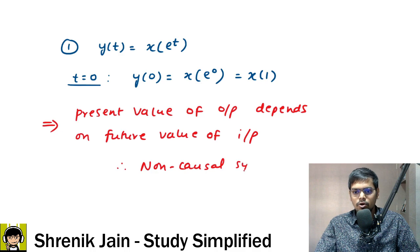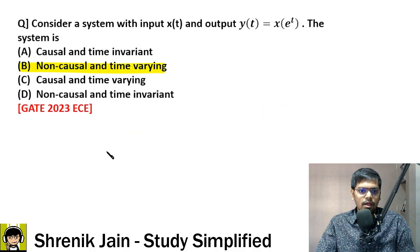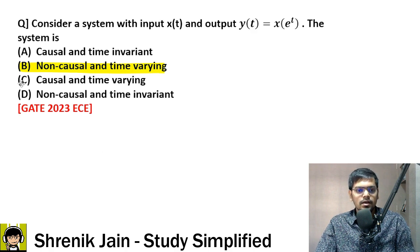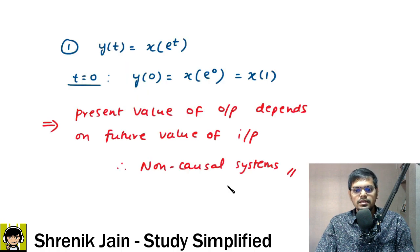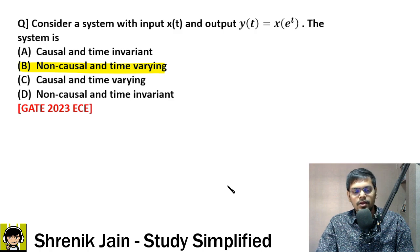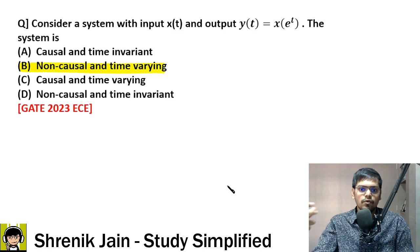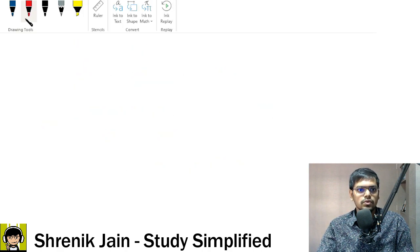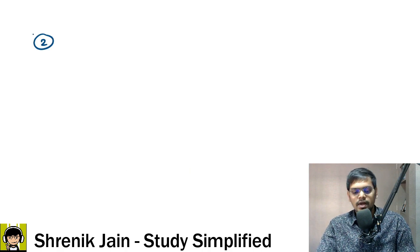Since it is a non-causal system, two options are eliminated. Options A and C are eliminated because they say the system is causal, whereas our system is non-causal. So now between B and D, which one is correct? To check that, we have to find whether the system is time variant or invariant.